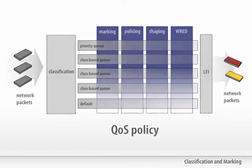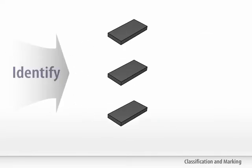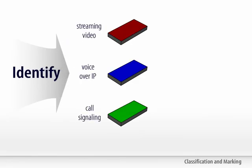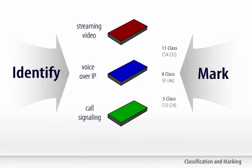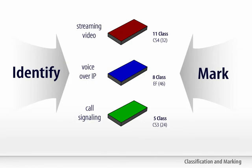The first step in the QoS process is to identify the packets and potentially mark them using layer 2 or layer 3 markings to identify them within the network.